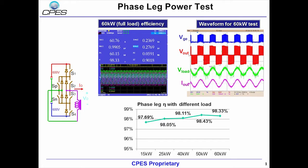The phase lag is tested under different load conditions and the efficiency is measured. From the testing results, we can see that the power stage has an overall 98% efficiency under the rated power of 60kW.